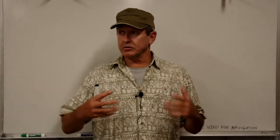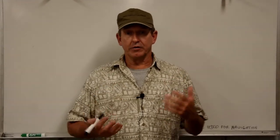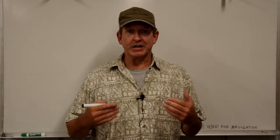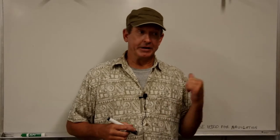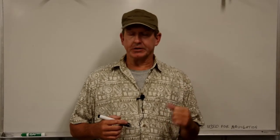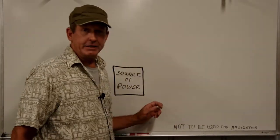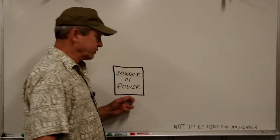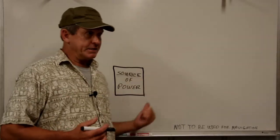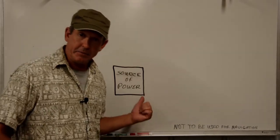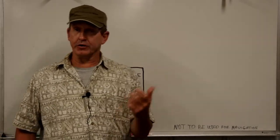So here we are at our whiteboard. Let's go ahead and draw out a very basic electrical circuit, then we can start introducing some of the faults into it and show you how they affect our circuit. The first part of any electrical circuit is going to be a source of power. In our very basic example, this source of power can be anything — a battery, an inverter, a generator.